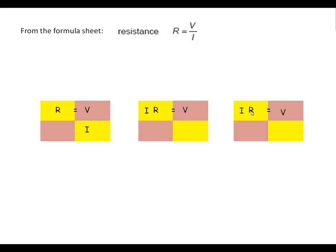R, we need that out of the way. Let's move that down to the yellow square there. I equals V over R. So that's the three equations, or three ways of rearranging that equation.